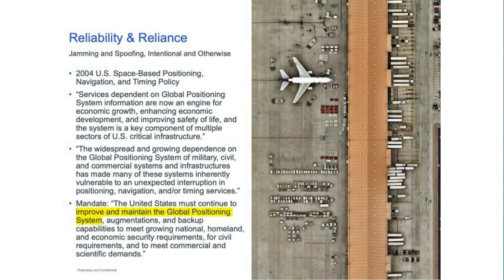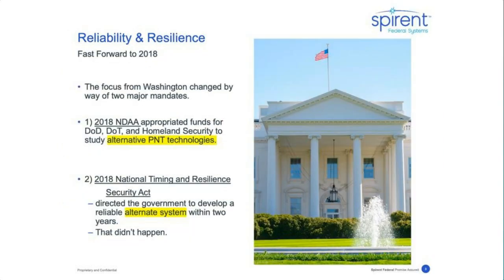That 2004 policy mandated making GPS better and more reliable. We also began to see official language about developing a backup to GPS, though that wasn't the main focus. In the last several years, the government has become increasingly insistent that we mitigate the risk of over-reliance on GPS. Resiliency became the focus — not just making GPS better, but augmenting it with alternative technologies.